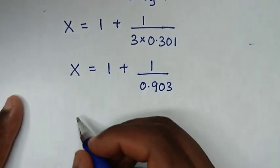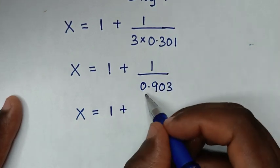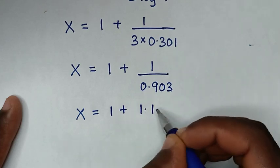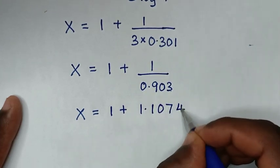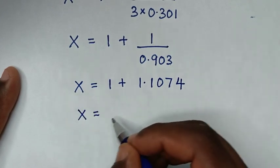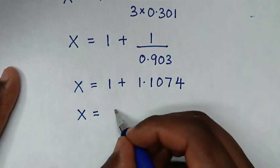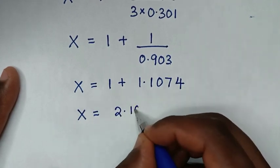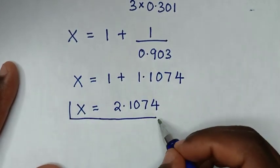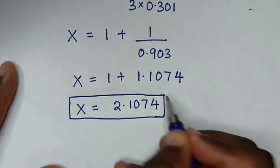Then it will be x is equal to 1 plus 1 divided by 0.903, which is 1.1074. So it will be x is equal to 1 plus 1.1074, which is 2.1074. Therefore, this is our final answer — the same as the answer from the first method.